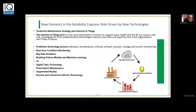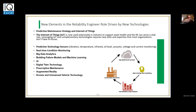There are new elements in the reliability engineer's role driven by new technology. Some of you are familiar with the Internet of Things — everything is connected. We have predictive technology, real-time condition monitoring, big data analysis, building failure mode models with machine learning, artificial intelligence, augmented reality, predictive maintenance, and drones — vehicles that are unmanned. Our technology is changing in a drastic way, especially with what's going on in this day and age. The reliability engineer needs to get into this stuff and start developing. It is the future.